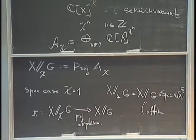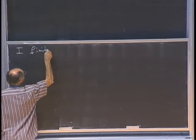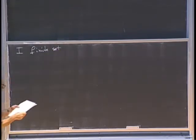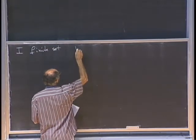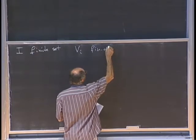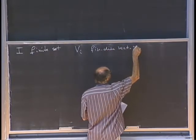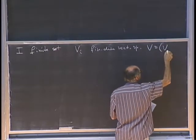Now we want to apply it to our quiver setting. First of all, there will be no quiver, just a finite set I, which will later be the set of vertices. For each i in I, we assign a finite dimensional vector space, and I call this I-tuple simply V.